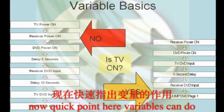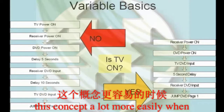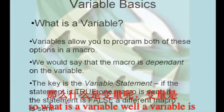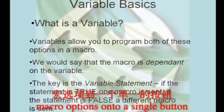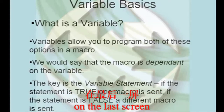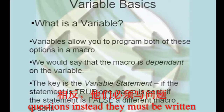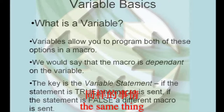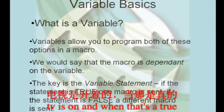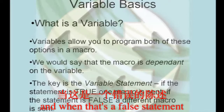Variables can do quite a bit more than just help the remote remember whether the TV is on or off, but most people seem to grasp this concept a lot more easily when we go through an example like this. So, what is a variable? A variable is what allows you to put both of these macro options onto a single button. It does this by tying the macro to a simple statement like the one we saw on the last screen. We then say the macro is dependent upon the variable. But variables don't work with yes or no questions — instead, they must be written as true or false, which really is about the same thing. When you want to have the ability to put two macros on the same button, you create a statement like "TV is on." And when that's a true statement, a particular macro gets sent, and when that's a false statement, a different macro gets sent.